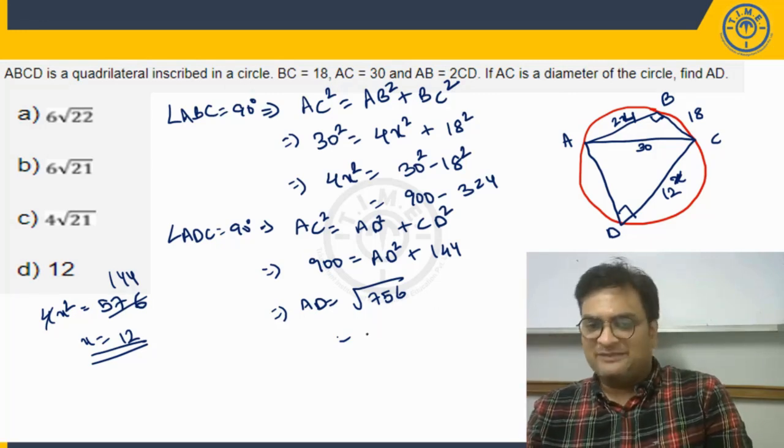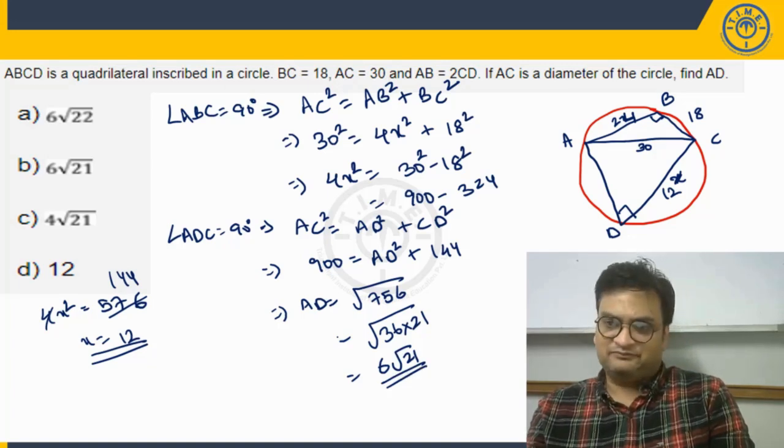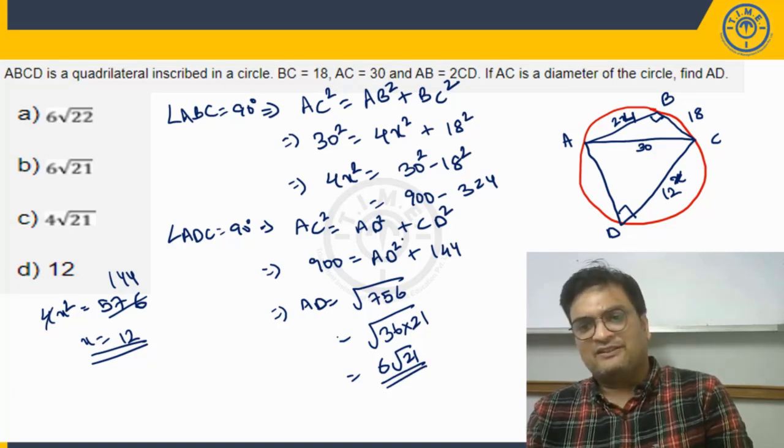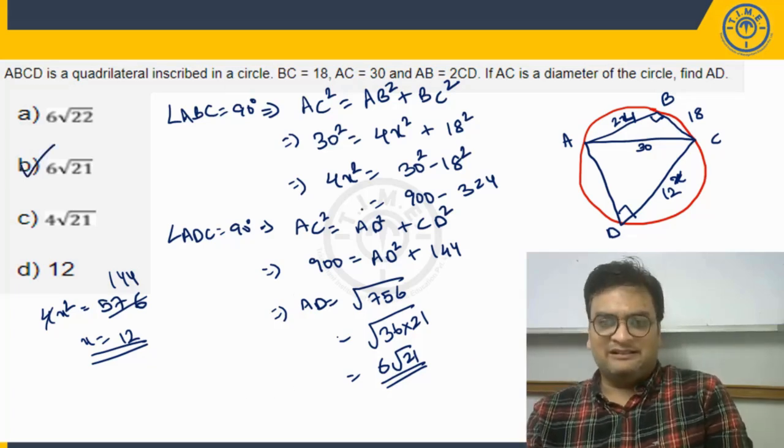So root 36, 36 goes 21 times. So root 36 is 6, root 21 is what should be our answer. So this is going to be our answer, okay. So this is how option choice B will end up being our answer. I hope we are clear with this working.